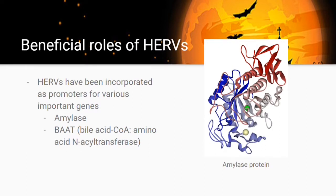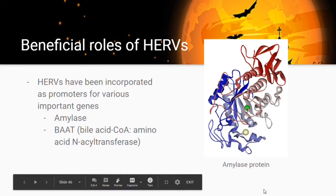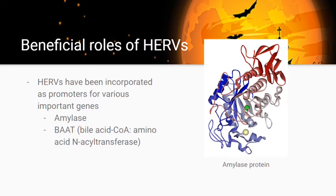Some endogenous retroviral elements have been incorporated as promoters for important genes, essentially increasing their expression. One example is amylase, an enzyme expressed in saliva that is involved in digestion. Another example involves the bile acid CoA amino acid acyltransferase gene (BAT), an enzyme involved in bile metabolism. With the incorporation of these retroviral promoter elements, we now have increased expression of these genes, allowing them to better perform their functions.